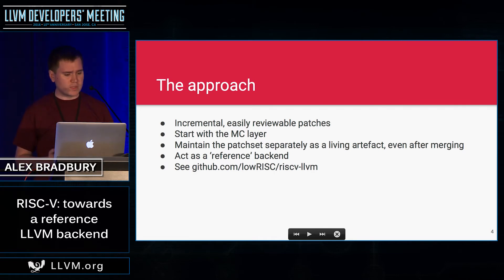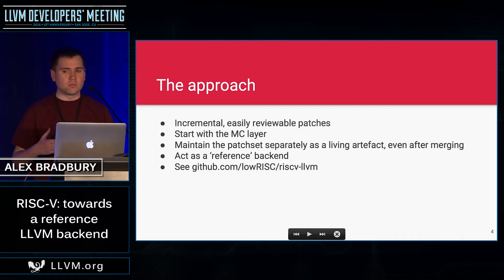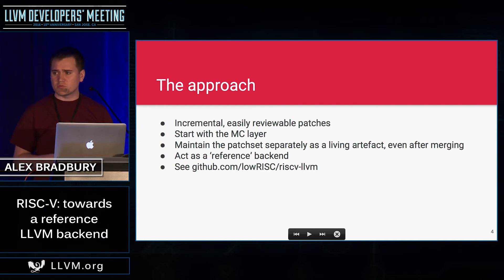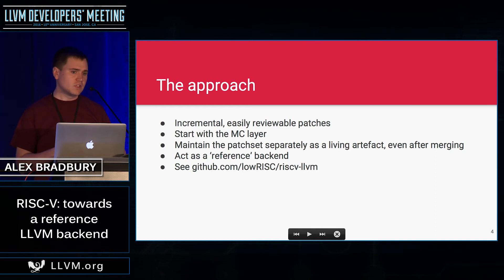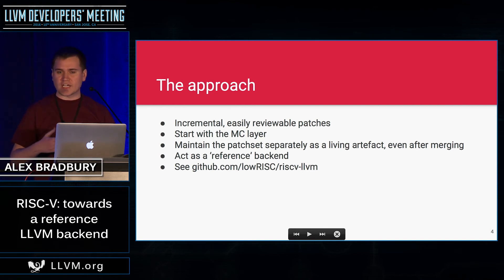My approach for this has been to take the extra time to write very incremental, easily reviewable patches — slightly differently versus a number of other LLVM ports. I've started with the MC layer and then doing code gen after. This actually seems to be working quite well. It's particularly useful given that the GCC port already exists and is quite stable, so it means that we can easily cross-validate against the existing GCC and binutils implementation.